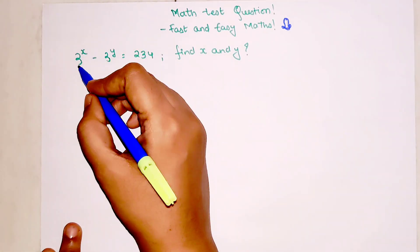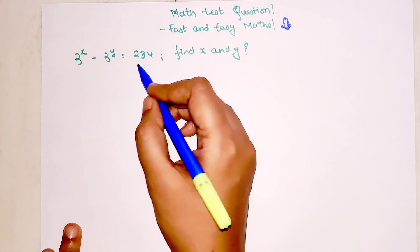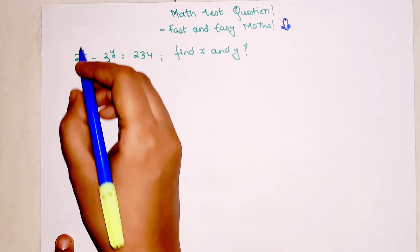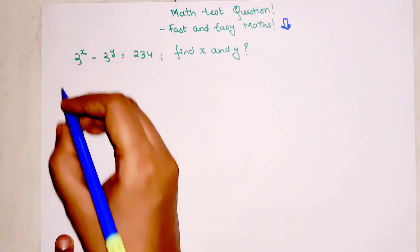The question is 3 raised to x minus 3 raised to y equals 234, and we have to find the value of x and y. For this one, the first step is super crucial.